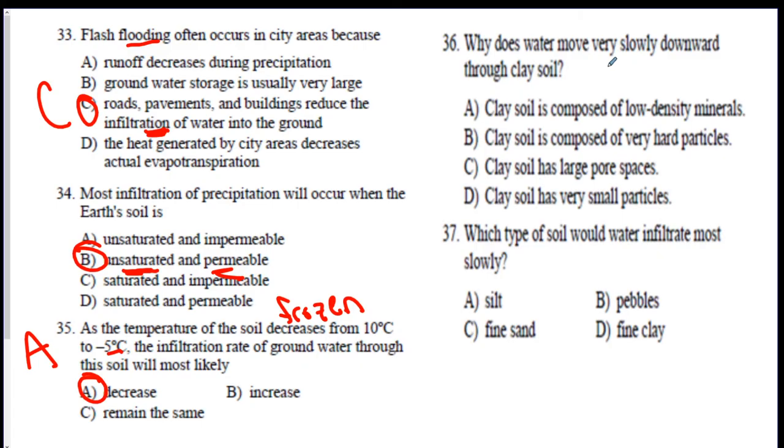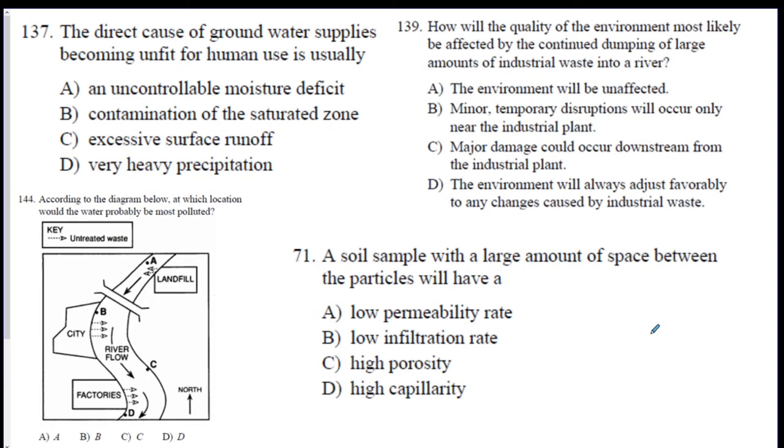Why does water move very slowly through clay? It's because clay is the tiniest particle, and the pore spaces in between clay are like nothing. So it takes very, very long. It has small particles. D. Which type of soil would infiltrate most slowly? We just did it. Clay is the smallest particle, so it would take the longest. Pebbles would be the fastest. Going on. Question 137. The cause of groundwater supplies becoming unfit for human use is usually why. Why would groundwater turn bad? Unfit means not good. Contamination. This is another name for pollution. If you contaminate it, you can't use it anymore.